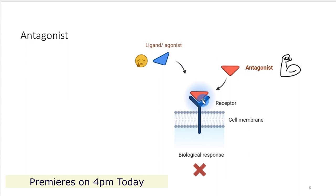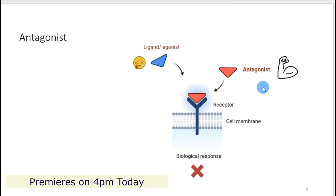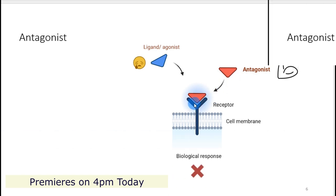Here is our receptor. This part is the ligand binding, or the antagonist binding, domain. The antagonists are designed to have a shape which is similar to the agonist, allowing them to also bind to the receptor but without activating it.